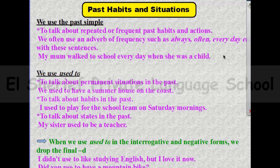For example: my mom walked to school every day when she was a child. Number two: using 'used to.' We use 'used to' to talk about permanent situations in the past. For example: we used to have a summer house on the coast.